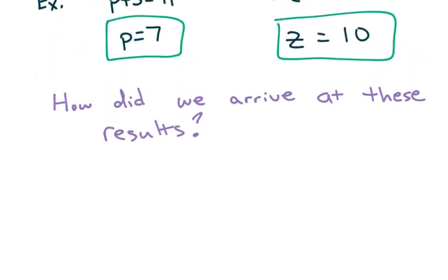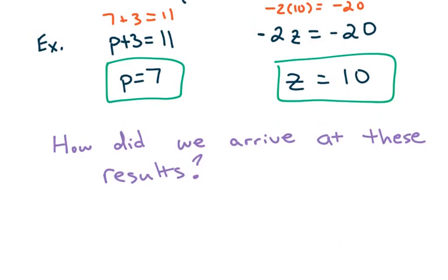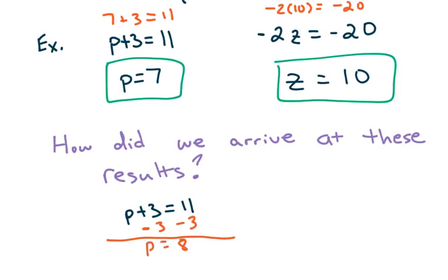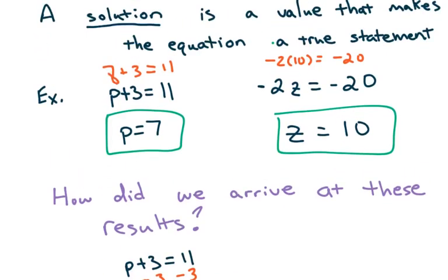How did we arrive at these results? Quick review: how do we isolate p in p plus 3 equals 11? The opposite of addition is subtraction, so we subtract 3. What you do to one side you have to do to the other, and p equals 8 — because 8 plus 3 is 11. Already a mistake there: p should be 8, not 7. Apologies. For negative 2z equals negative 20: when you see a number and a letter next to each other, they are being multiplied. The opposite of multiplication is division, so divide by negative 2, and z equals 10.